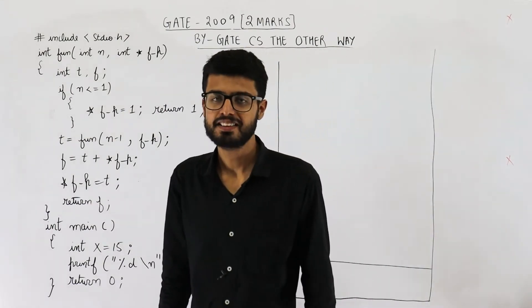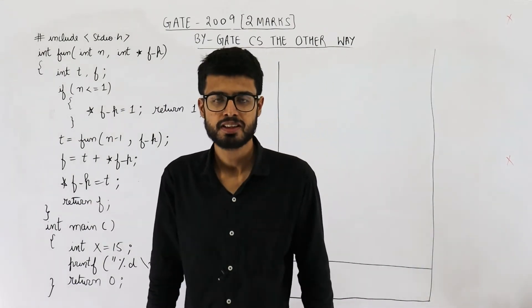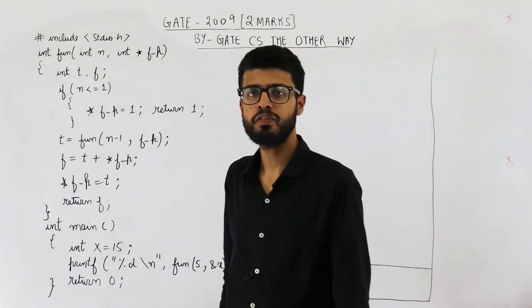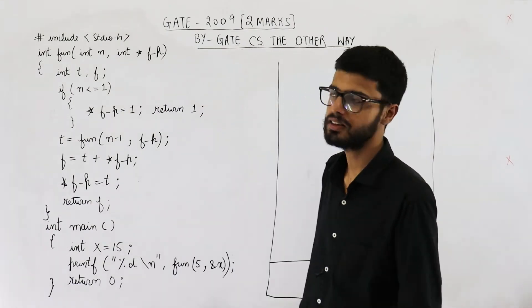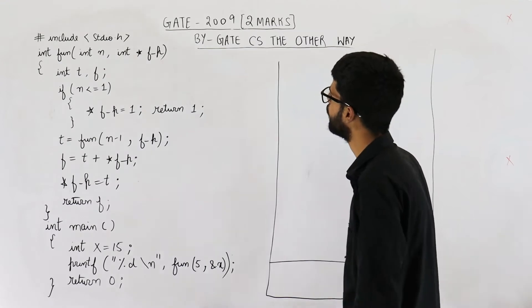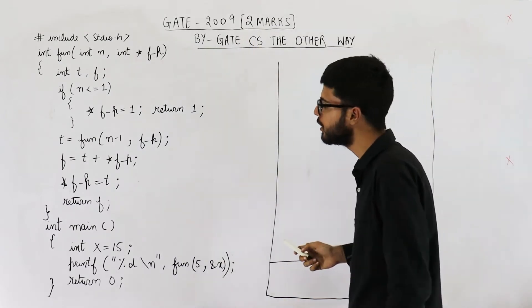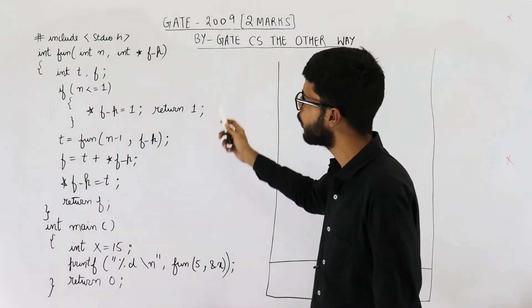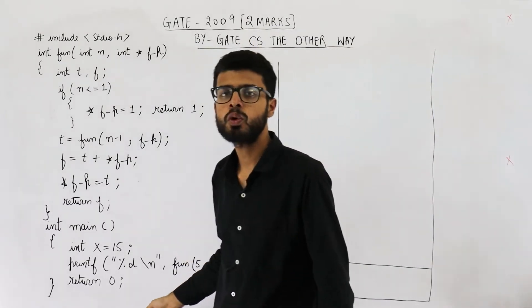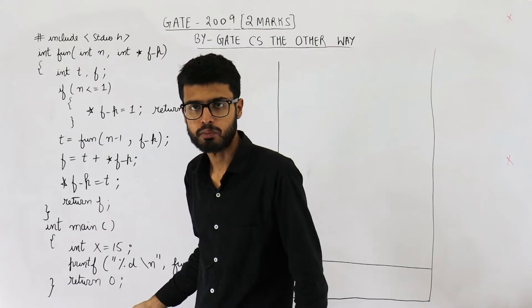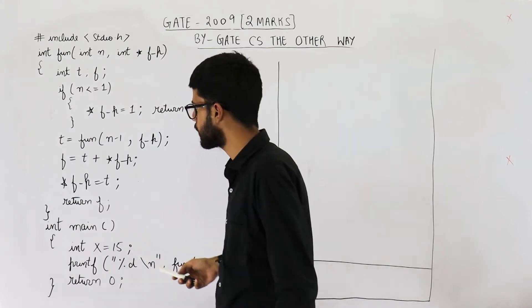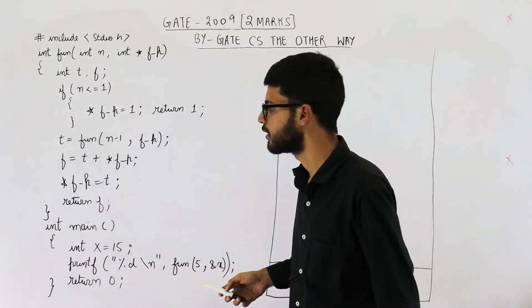Hello dear students, welcome back. This two-marks question is from the topic of recursion and is from the GATE 2009 exam. You need to find what will be the output of this program. So let's start executing it.